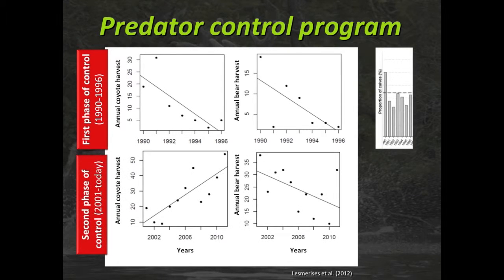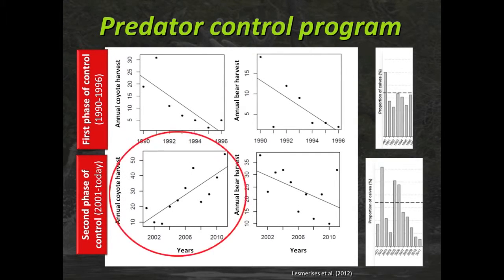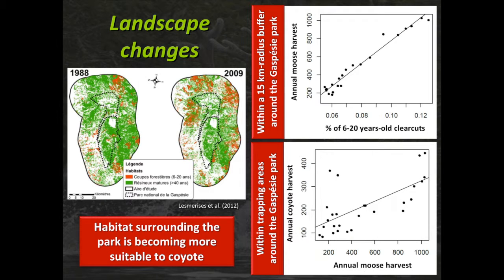Recently, one of my grad students tried to establish relationships between predator control and caribou population dynamics. During the first phase of control, year after year they were harvesting fewer and fewer predators — a satisfying result with improved calf proportions. But during the second phase of control, from 2001 to today, the number of bears harvested is surprising, and the number of coyotes is highly increasing even with more and more pressure — partly explaining the highly variable proportion of calves.